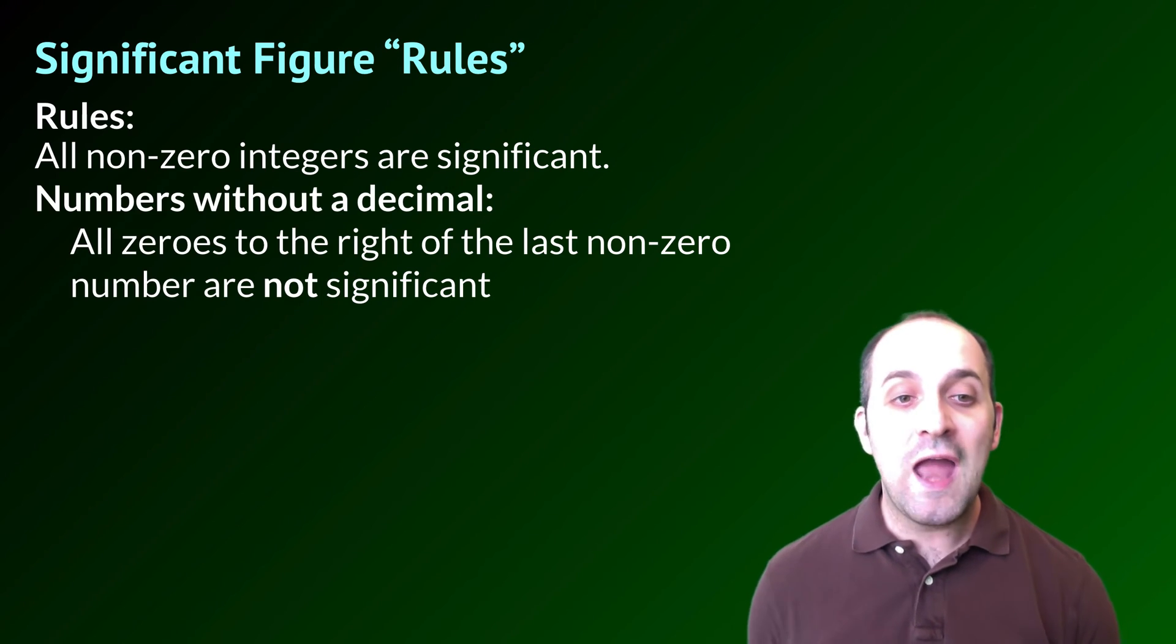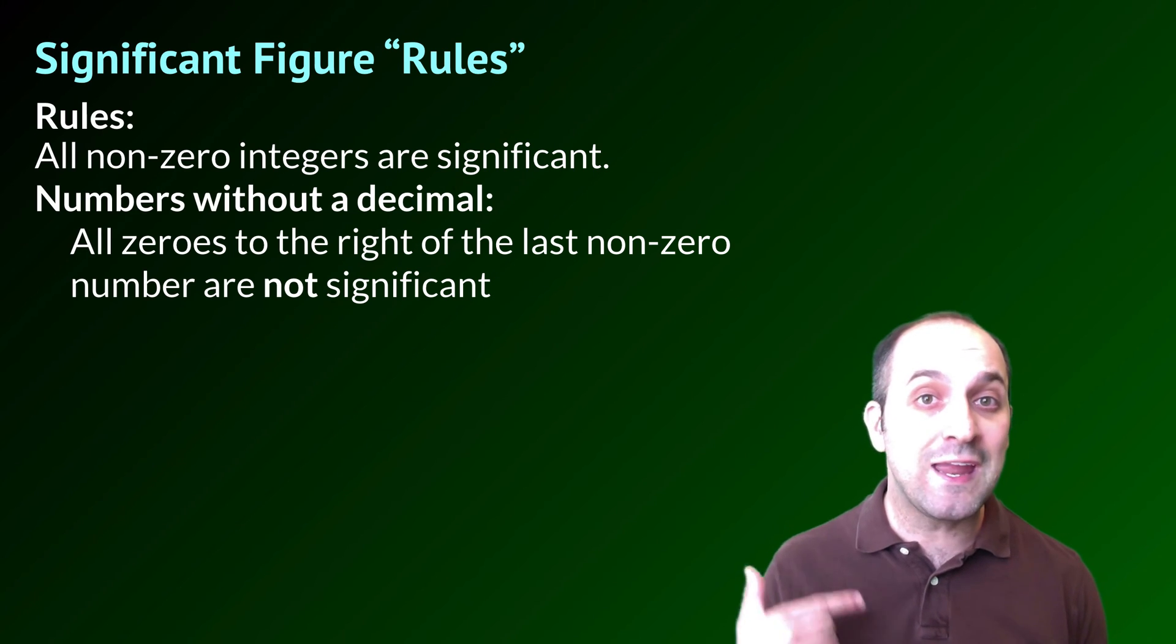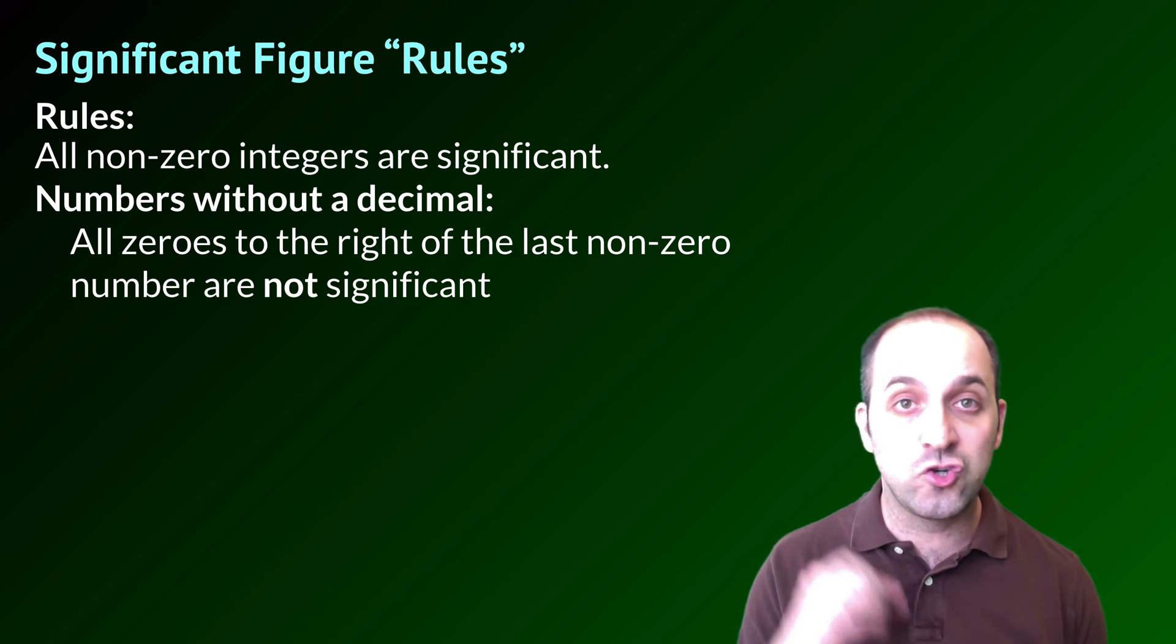For numbers without a decimal, any zeros to the right of the last non-zero number are not significant unless we indicate it through some devices that I'll show you on our next slide.